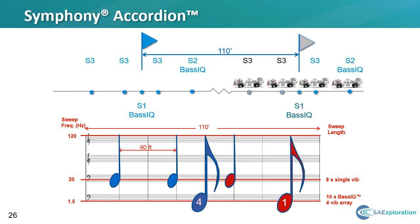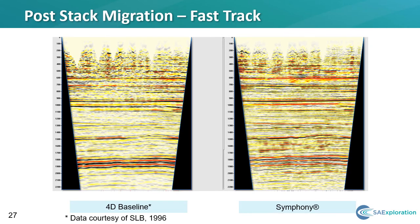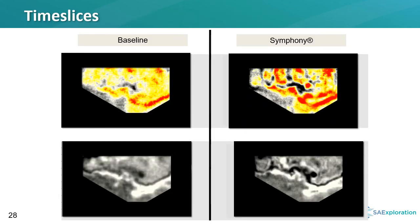To further improve efficiencies, we have also modeled the utilization of multiple fleets of vibrators using this configuration. Here we see a comparison of the legacy 1996 acquisition on the left and the DSA or Symphony acquisition on the right. The Symphony display has been decimated to the same trace count or screen resolution as the legacy dataset. You can see improvements in the resolution and sharpness as well as the continuity of the horizons in both the shallow and deeper parts of the section. A set of time slices shows the legacy 1996 survey on the left and the new DSA Symphony survey on the right. The broadband Symphony acquisition shows a definite improvement in the sharpness or resolution of the features shown in these slices.